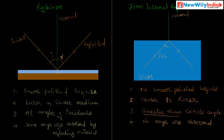The fourth difference: some rays are absorbed by the reflecting material — that means the mirror absorbs some rays. But in the case of total internal reflection, no rays are absorbed; all rays passing from the denser medium to the rarer medium get reflected. These are the differences between reflection and total internal reflection.